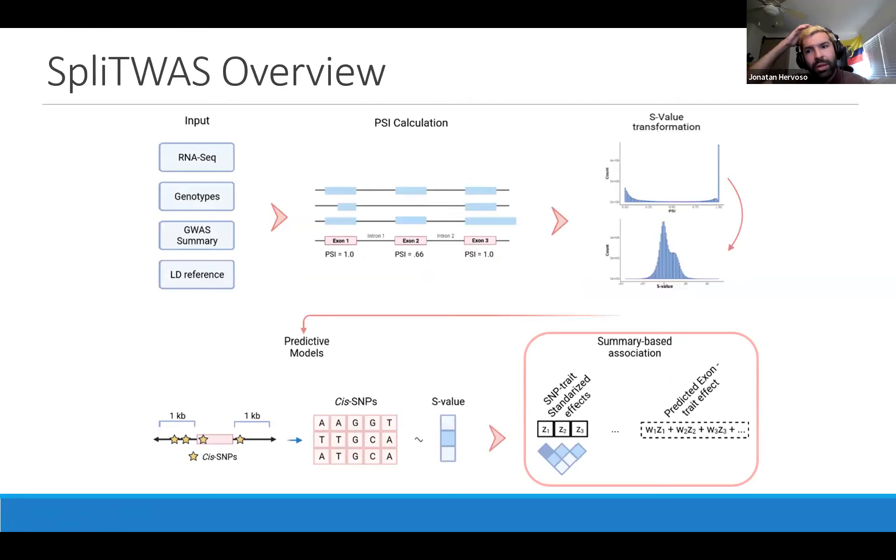From here comes the novelty. We've used GWAS summary statistics which tell us the relationship between the SNP and the traits we're looking at and the effect size of those. From our predictive models, we were able to calculate the effect sizes between the SNPs and the splicing levels. What we can do is a linear combination between the Z-scores of the SNP to trait associations and add the weights between the SNPs and our splicing values to then create a predictive exon usage to trait effect. Here we're going from genetics to splicing to a trait, bridging the gap I had mentioned and established early.